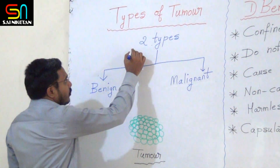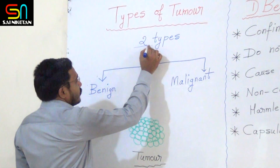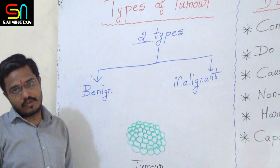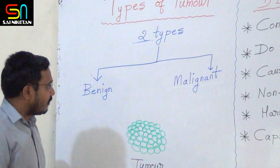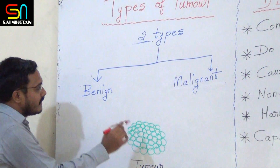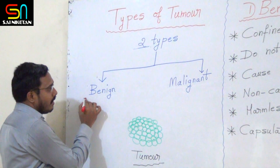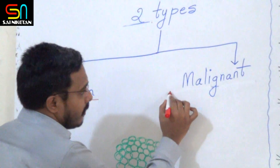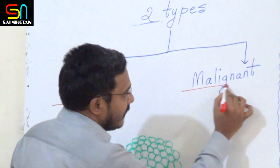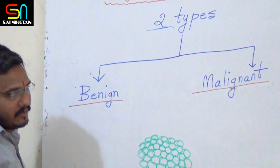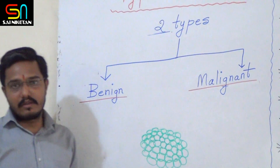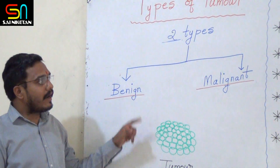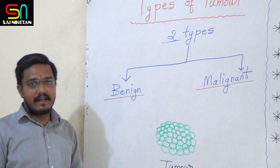There are two types of tumours. The first one is benign tumour and the second one is malignant tumour. So the two types of tumours are benign and malignant.